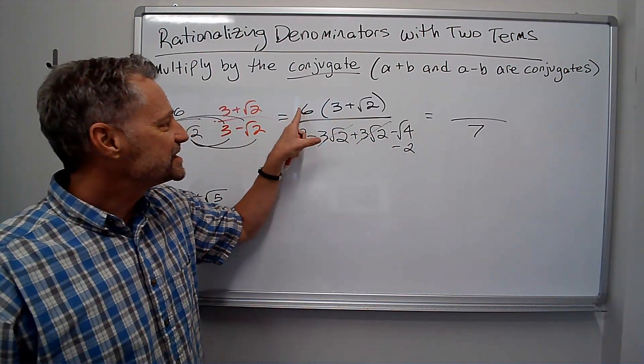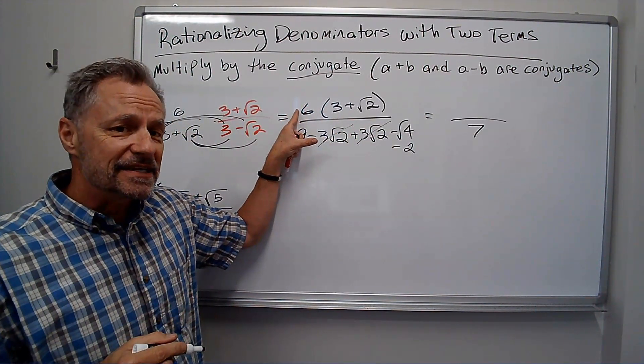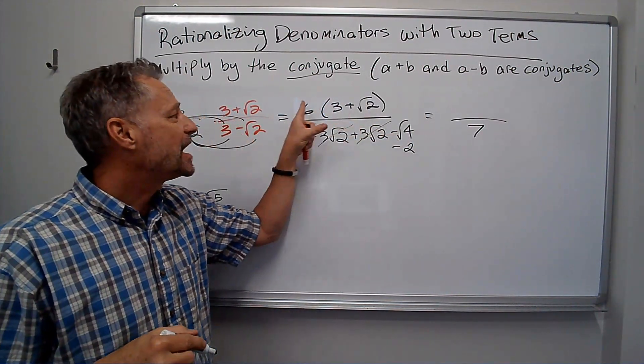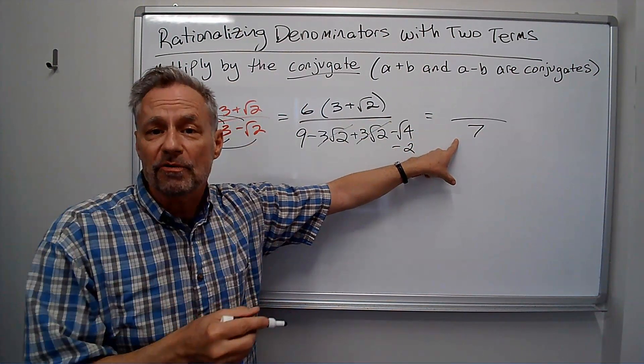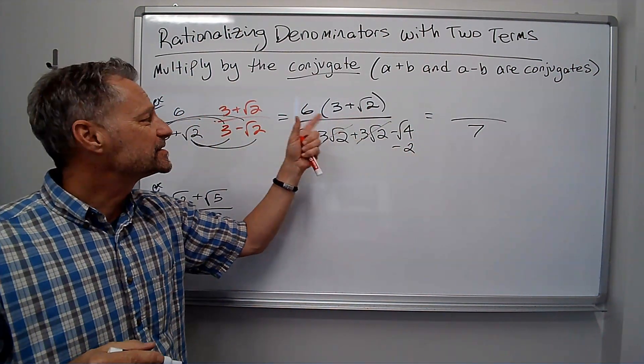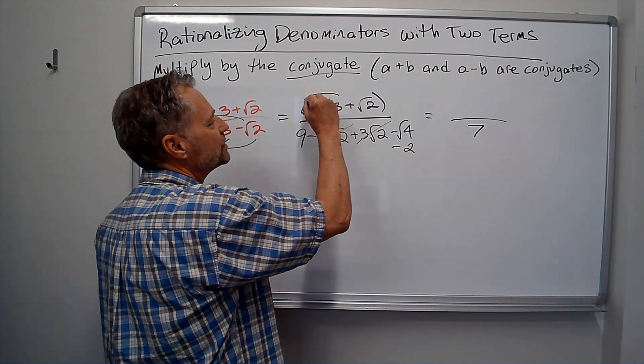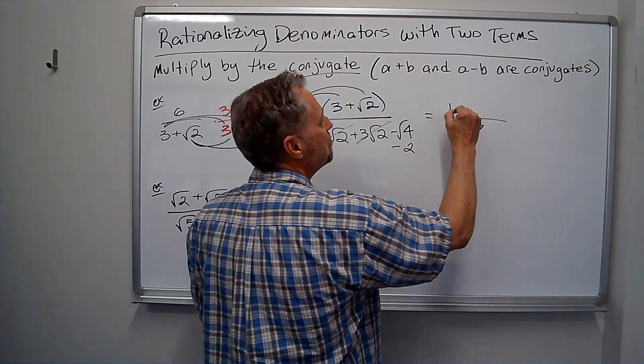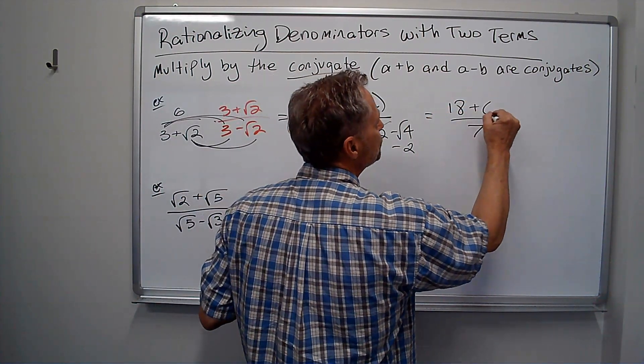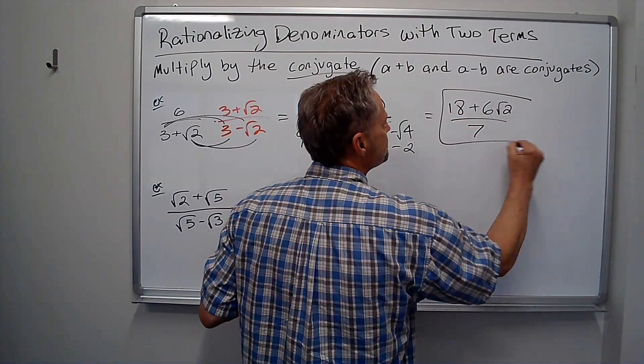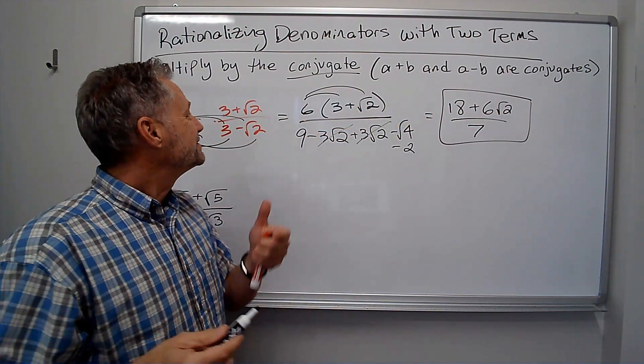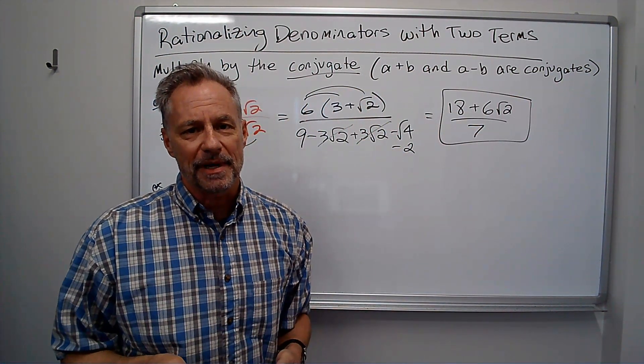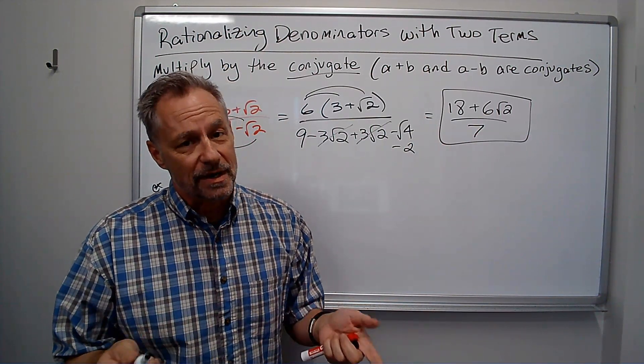On the top, this 7 is not going to factor and reduce with that 6. So I'm going to go ahead and multiply that out. If this was, say, 8, I could reduce the 6 over 8 to 3 over 4, and then leave this. But since I can't, I'll multiply it out. Some instructors may want you to leave it factored out that way. I like it multiplied out. So we get 18 plus 6 root 2. And that's my answer. Does it look better than it started? No, but there's no radical in the denominator. That was our goal.